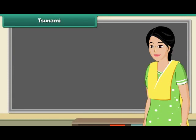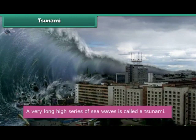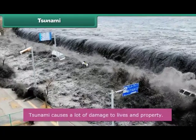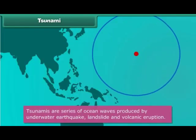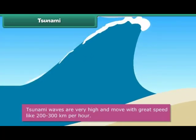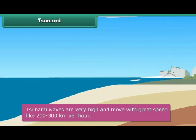A very long, high series of sea waves is called a tsunami. It causes a lot of damage to people and property near the sea. Tsunamis are series of ocean waves produced by underwater earthquakes, landslides, and volcanic eruptions. These waves can be 30 meters high and 200 kilometers long, traveling at speeds of 200 to 300 kilometers per hour.